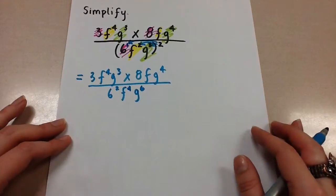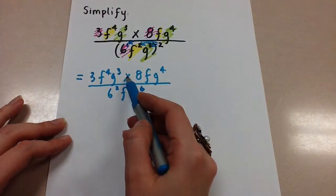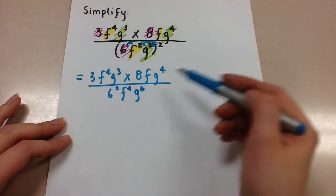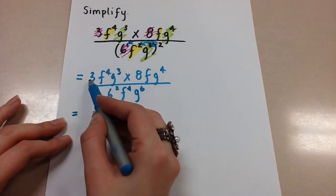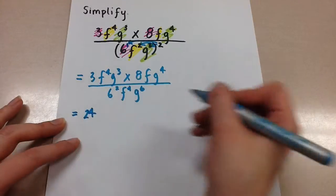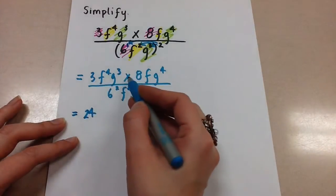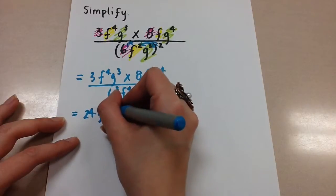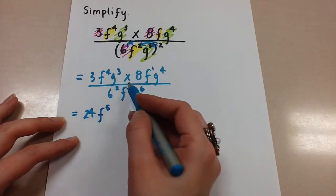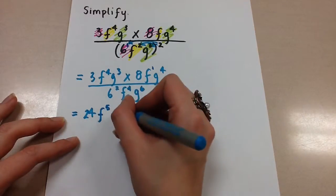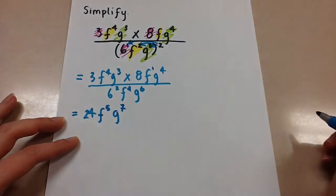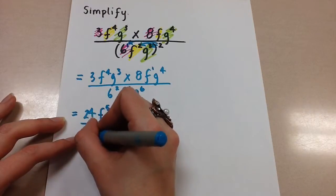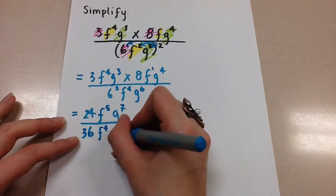Now we're going to use the other exponent laws to simplify the rest, because we have multiplication and then a division. I'm going to work just with the top part of the fraction first — numerator and denominator separately. For the coefficients, 3 times 8 is 24. Then F to the power of 4 times F to the power of 1 — we add those exponents to get F to the power of 5. Then G to the power of 3 times G to the power of 4 — we add the exponents and get G to the power of 7. In the denominator, 6 squared is 36, and we have F to the 4 and G to the 6.